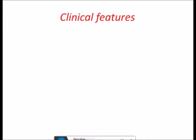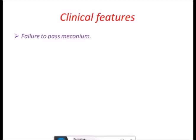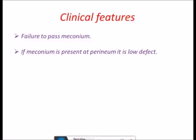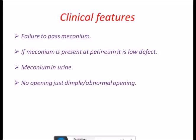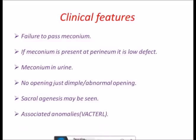Clinical features: a newborn with ARM will not be able to pass meconium. If meconium is present at the perineum or there is a low fistula, it indicates a low defect. If it is a high fistula, there will be meconium and urine mixing, no anal opening or just a dimple, or an abnormal opening. Sacral agenesis may also be seen.